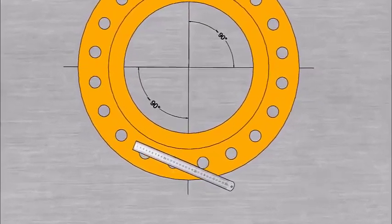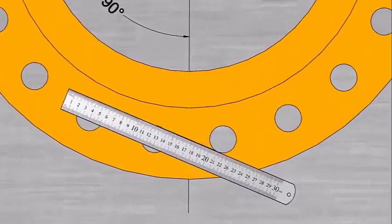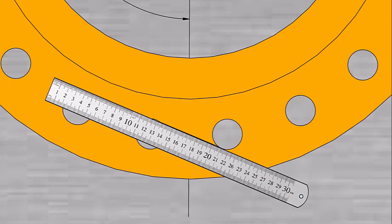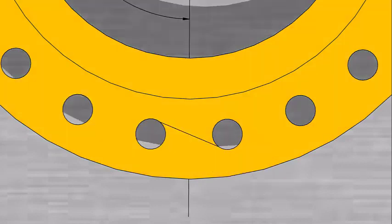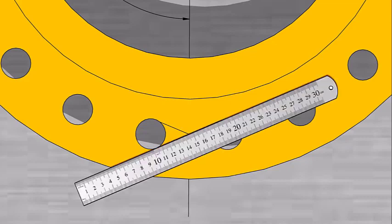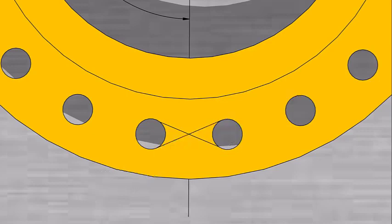Mark the center of any adjacent two holes, drawing tangential lines as shown. Mark the center of the two holes, opposite on the other side.